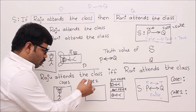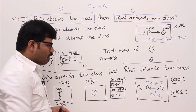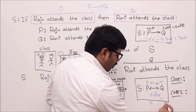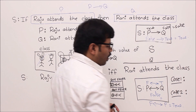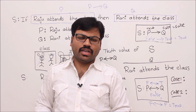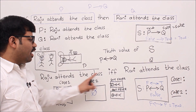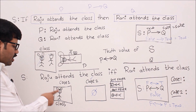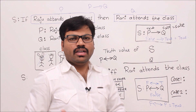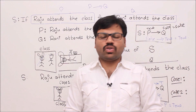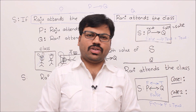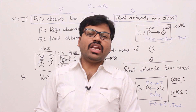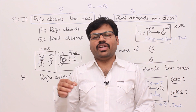Case two: both Raju and Rani are absent — both got fever. The truth values of P and Q are both false, so false↔false equals true. That means 'Raju attends the class if and only if Rani attends the class' is true when both are absent, but false if only one is present. To summarize: P→Q in logic is equivalent to 'if P then Q' in English, and P↔Q is equivalent to 'P if and only if Q.'